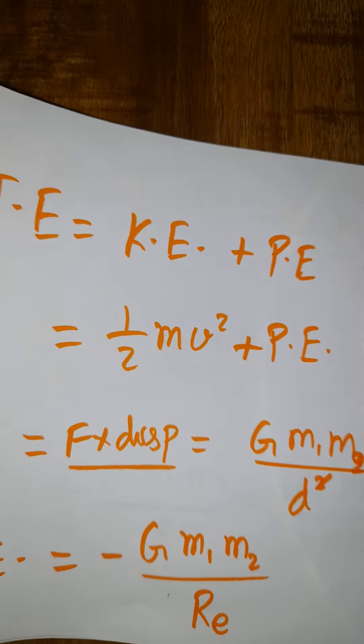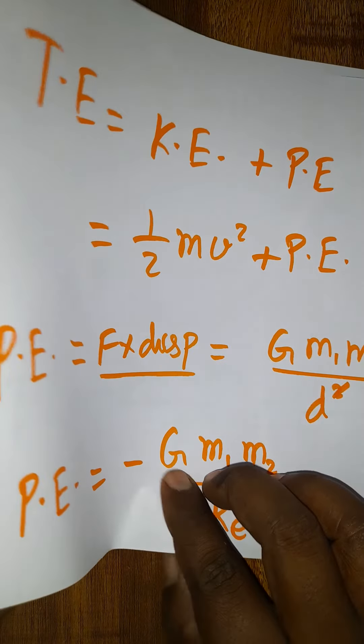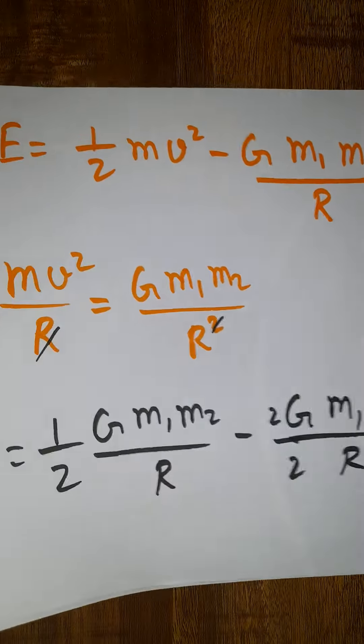Change in energy equals initial minus final, or final minus initial. Total energy equals kinetic energy plus potential energy. This is the equation I derived for the total energy.